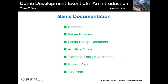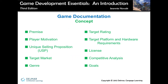Now we're going to talk about game documentation, which is a huge part of the game design process. There's a lot of writing to make sure the game gets created the way you want it to. The first document is the concept document. It includes the premise, player motivation, unique selling proposition, target market, genre, target rating, target platform and hardware requirements, license, competitive analysis, and goals.